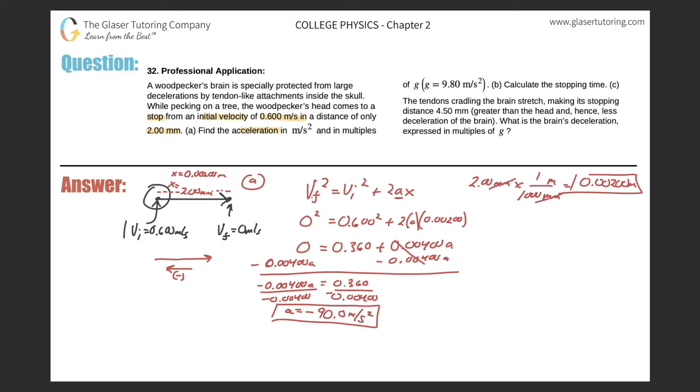Now it also asks us to calculate this in multiples of G. So just remember this formula that G is equal to A over 9.80. The only thing you have to remember is that the units of A must be meters per second squared, which they are. So G will then be equal to negative 90.0 over 9.80. And now my value will be negative 9.18 G. That would be the value in G. So part A is finished.